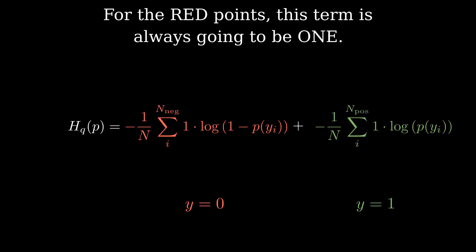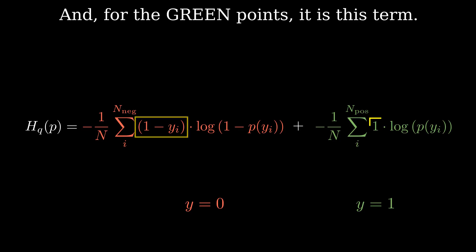Now, let's focus on the red points. We can replace this term, 1, for another term that is always going to be 1, but only if the point is red. Moving on to the right side of the equation, it is this term that is always going to be 1, but only if the point is green.